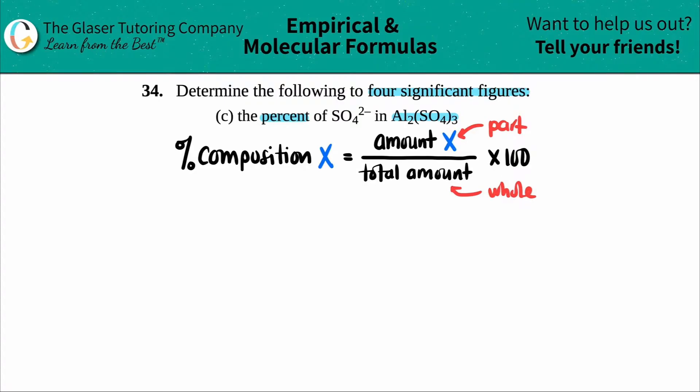In this case, they're specifically asking for the percent of the sulfate ion. So this would be the amount of sulfate divided by the total amount of Al₂(SO₄)₃, then multiply by 100. Where are the numbers coming from? We take percent compositions from the periodic table if we have no other numbers.